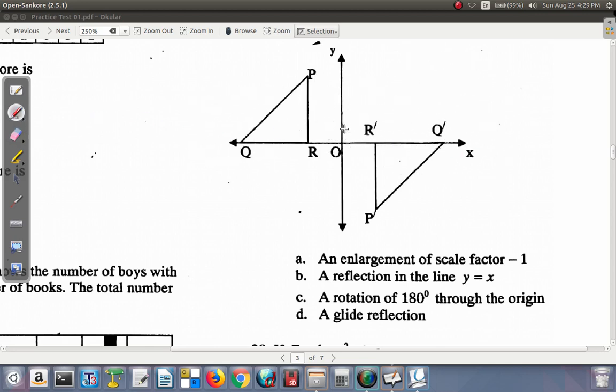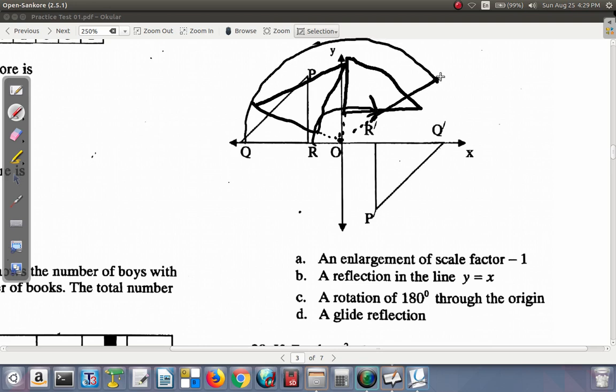Q would keep going this way. And R'Q', well this side RQ would match R'Q'. So it seems as if it's going to be the rotation. Let's look at the entire triangle. If you should rotate the entire triangle, you'll have something like this at one point. As you keep rotating, it would look like this.